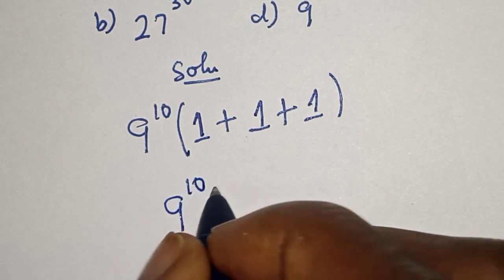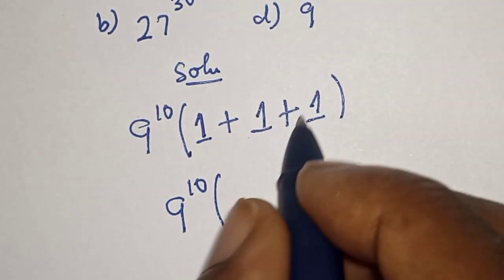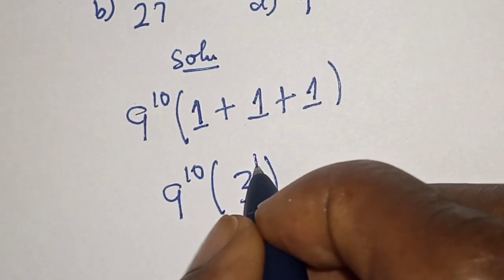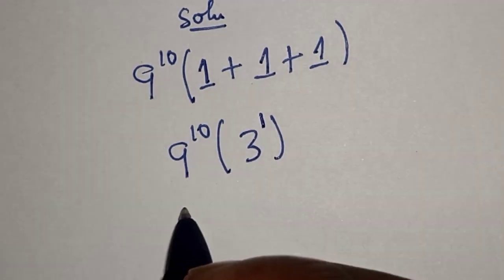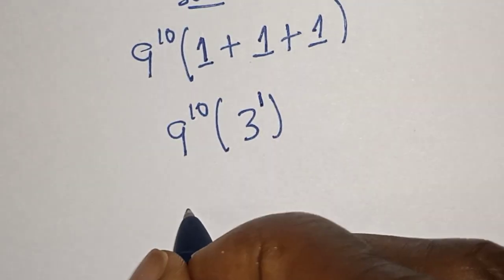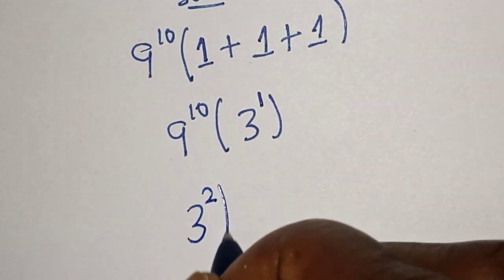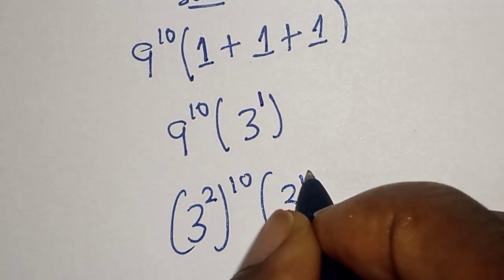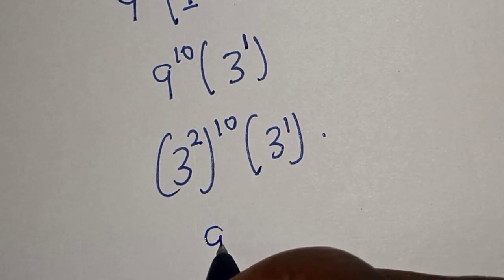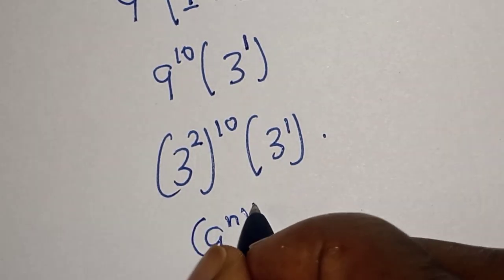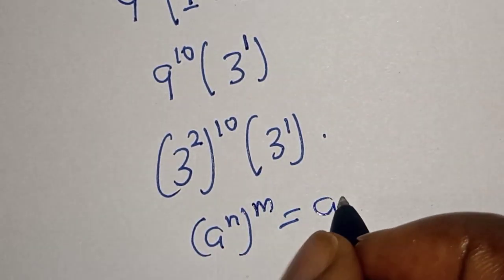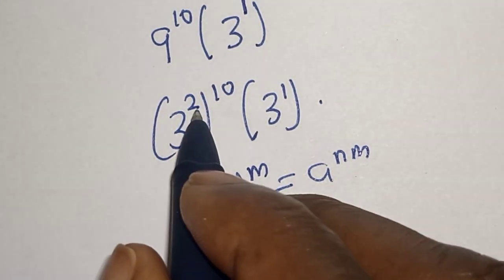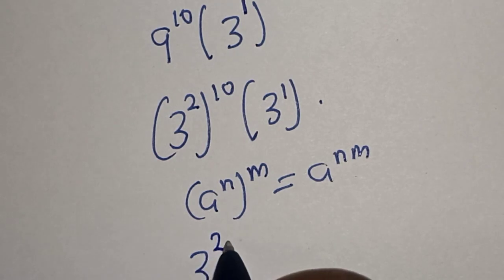9 raised to power 10 bracket 1 plus 1 plus 1 equals 3. And 3 is also 3 raised to power 1. Take note of this rule: a raised to power n raised to power m is equal to a raised to power n×m. Then this is 3 raised to power 2 times 10, which is 3 raised to power 20.